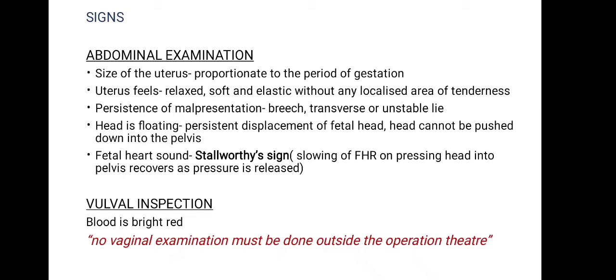The Stallworthy sign is the slowing of the fetal heart rate when pressing the fetal head down into the pelvis, which recovers promptly once the pressure is released. On vulval inspection — only inspection, no vaginal examination — note whether bleeding is still occurring or has stopped and observe the color and amount of blood. In placenta previa the blood is bright red, whereas in abruptio placenta it is dark. Importantly, PV examination is contraindicated in a suspected case of placenta previa.